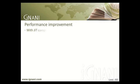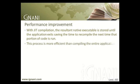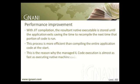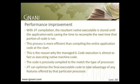With JIT compilation, once the code has been compiled into a native executable, it is stored until the application exits so that it does not need to be recompiled the next time that portion of code is run. This process is more efficient than compiling the entire application at the start, because the likelihood of large portions of code actually being executed in any given run is very small. The managed IL code execution is almost as fast as executing native machine code, and since the JIT compiler knows exactly what processor type the program will run on, it can optimize the final executable code to take advantage of any features offered by that particular processor.